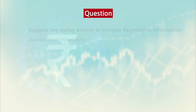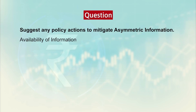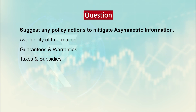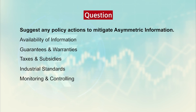We come up with the policy actions in terms of a question: suggest any policy action to mitigate asymmetric information. The policy actions comprise of: information availability to both parties as much as possible; issuing of a guarantee and warranty policy; imposition of taxes and subsidies, particularly tax on the buyer and subsidy on the seller; industrial standardization; monitoring and controlling through various kinds of reporting based on government regulations; and licenses or permits given to take care of the asymmetry, along with liability laws.